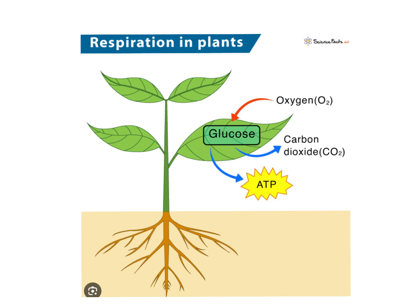We have CO2, H2O, and then ATP, which is the energy coming out of the equation. So a lot of the glucose will be used for basic plant respiration. Remember, by the time the organism that consumes the plant gets the energy, only 10% of the energy is going to be able to be passed on to that consuming organism.